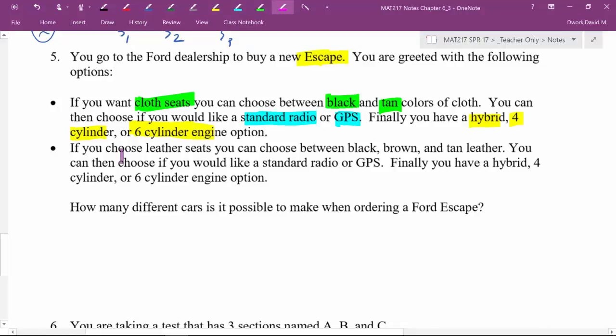If you want to choose leather seats, then you can choose between black, brown, and tan. Then the rest of it pretty much stayed the same because then you would have the standard radio or GPS. And then finally, you have the hybrid engine, four-cylinder or six-cylinder engine. So the question is, how many different ways are there to make a Ford Escape? How many different possible Ford Escapes are there?